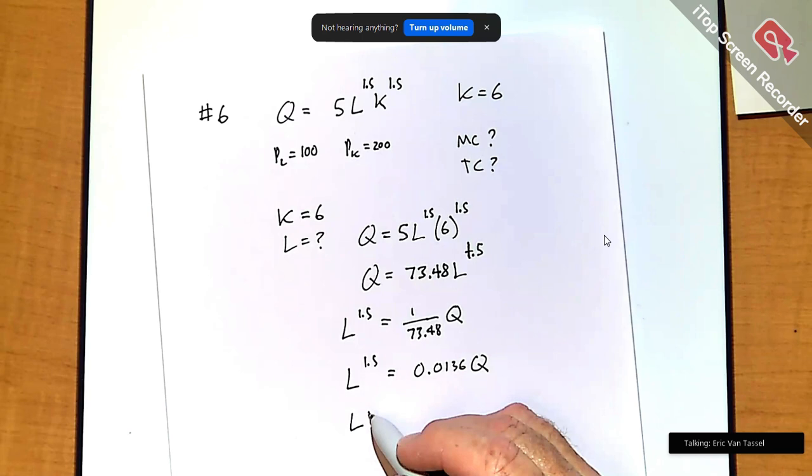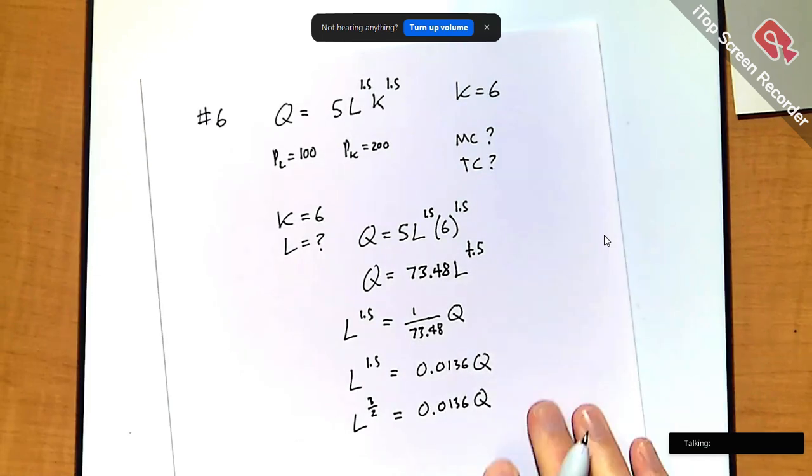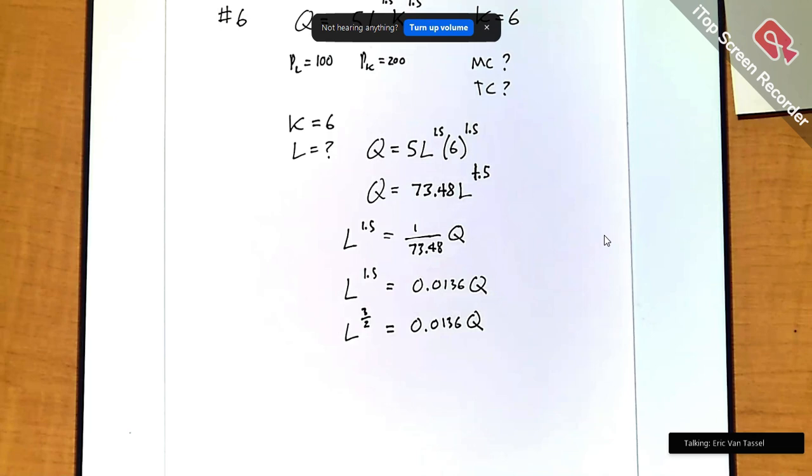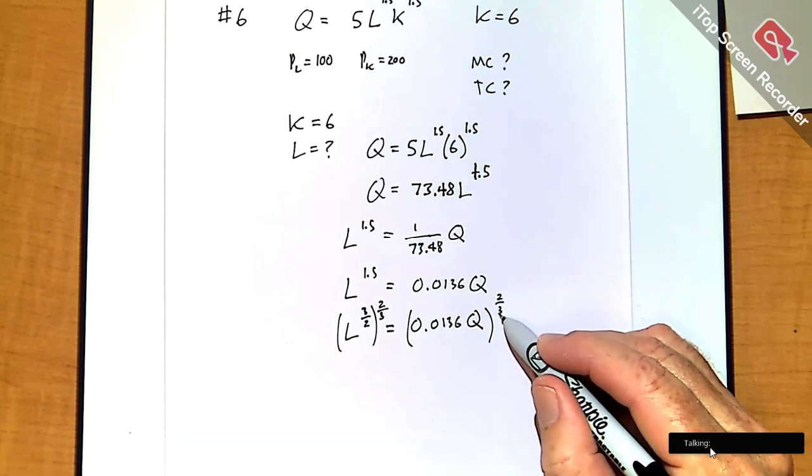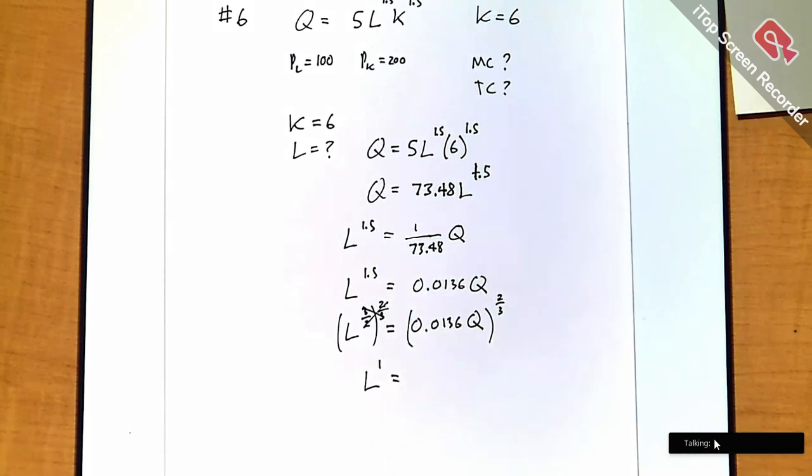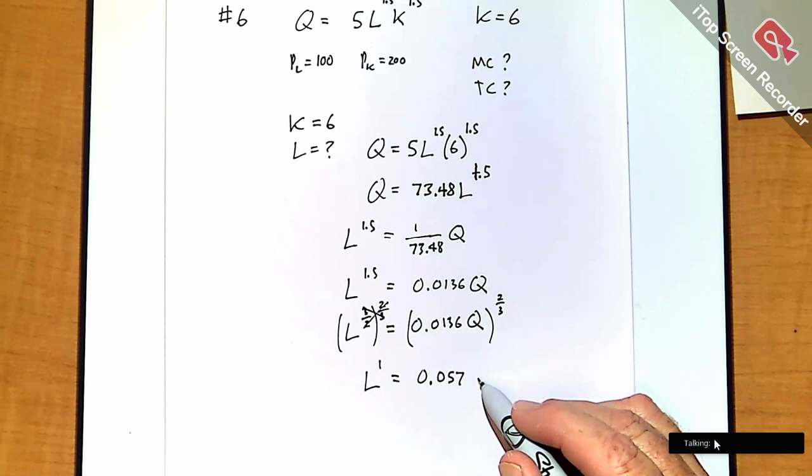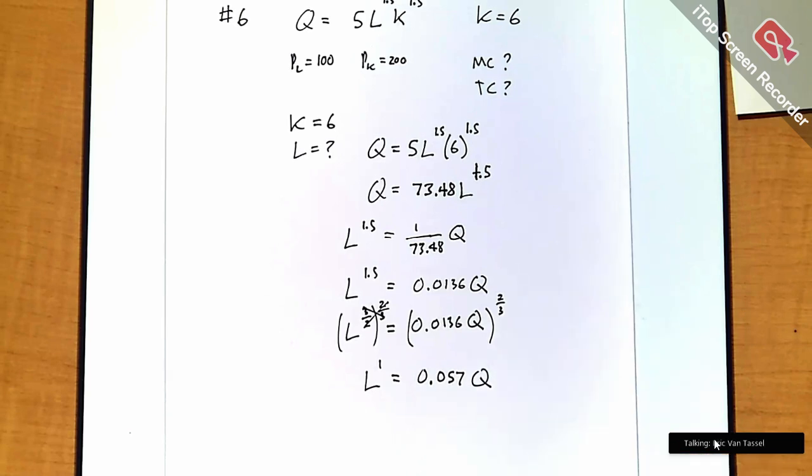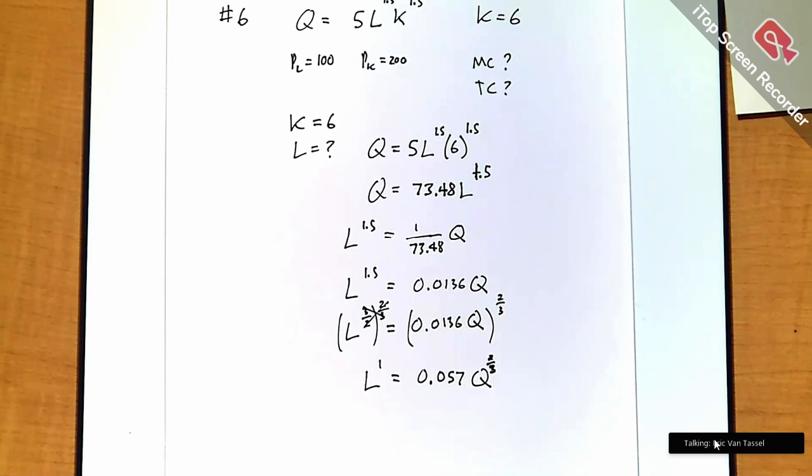And then I've got to get rid of this, this is just 1.5, yeah? So I'm going to take both sides to the exponent 2/3. That cancels. So if you take that 0.0136 and take that to the power of 2/3, you get something like 0.057 times Q to the power 2/3. So that would be your labor purchase. This is a function in Q.